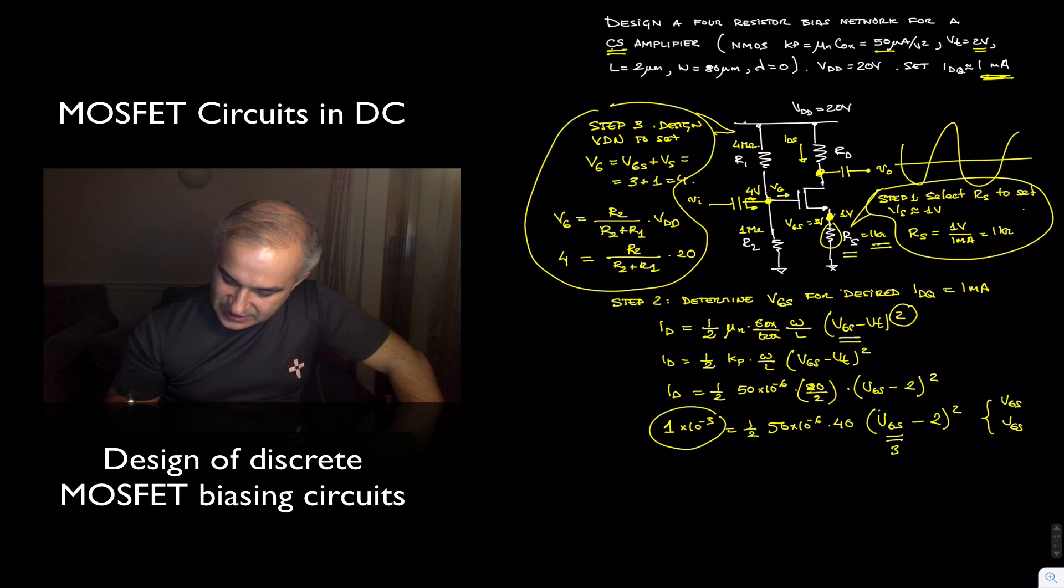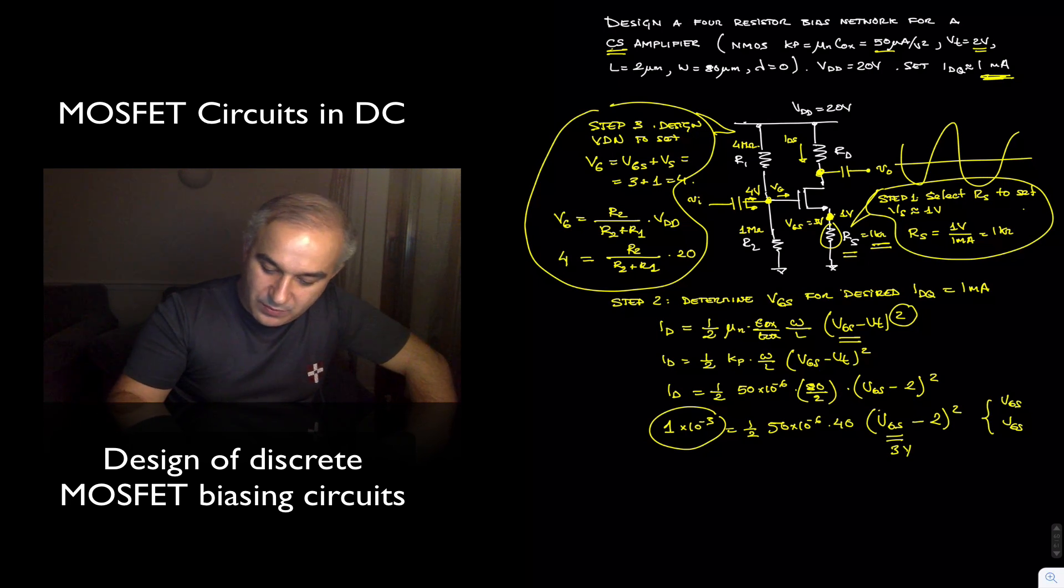So in this case, we did it and we found that the voltage gate to source needed to be 3 volts. And so if we know the voltage at the source is 1 volt, voltage gate to source 3 volts, we are able to find the voltage at the gate, 4 volts.